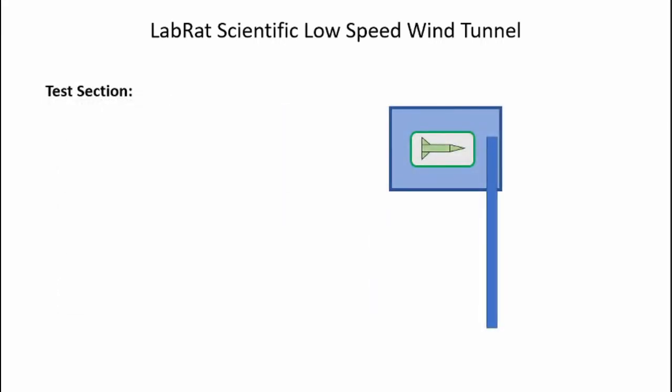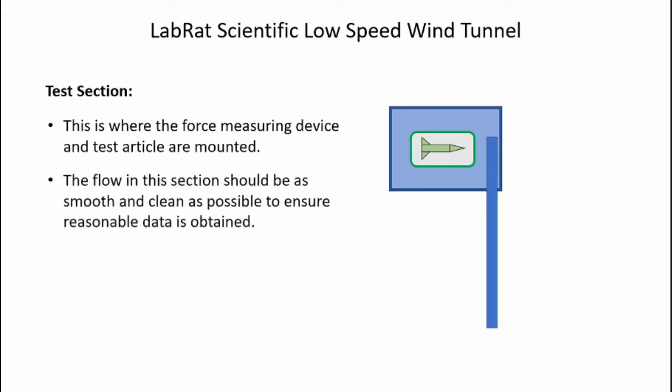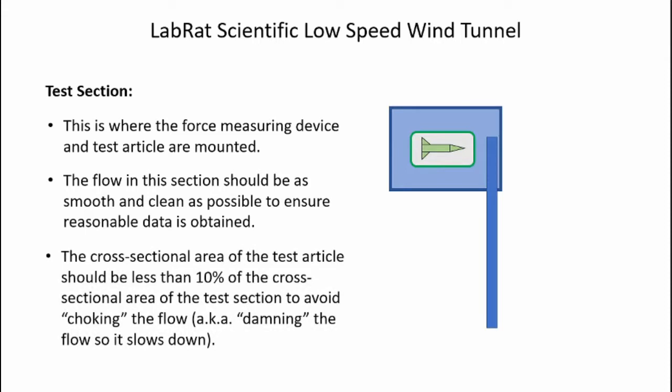Next I have the test section. This is where the force measuring device and test article are mounted. The flow in this section should be as smooth and clean as possible to ensure reasonable data is obtained. The cross-sectional area of the test article needs to be 10% or less of the cross-sectional area of the test section. This is done to avoid choking the airflow or damming it up and slowing it down.